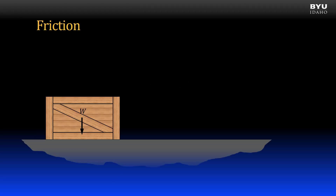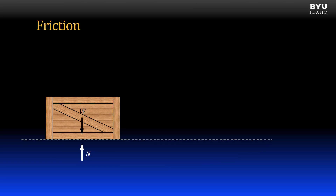Suppose I have a crate supported on level ground. The crate has a self-weight of W. The ground supports the crate with a normal force equal and opposite to its self-weight. Suppose I push horizontally on the crate with a force P for push. If the crate does not move, it is because the ground is not smooth and a friction force develops that balances or resists the applied force.